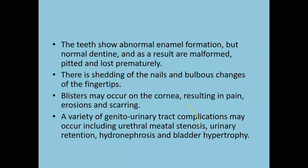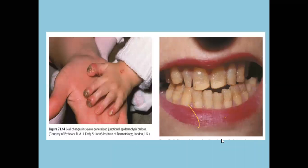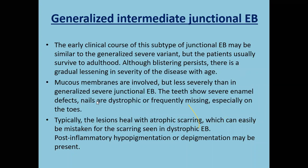Teeth show abnormal enamel formation, shedding of nails, bullous changes in fingers. Blisters occur in the cornea resulting in erosions and scarring. Genitourinary complications include urethral meatal stenosis, urinary retention, hydronephrosis, and bladder hypertrophy. Generalized intermediate type of junctional EB has all the features of severe EB but in milder form. Mucous membranes are involved but less severely; teeth show enamel defects and nail dystrophy, but all less severe than the severe form. Post-inflammatory hyper- and hypopigmentation and atrophic scarring occur.